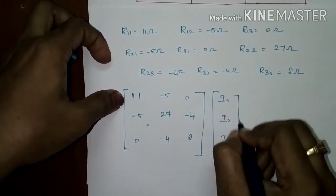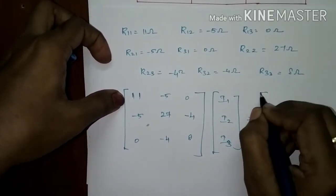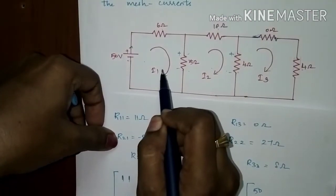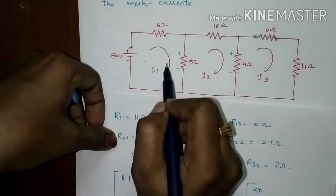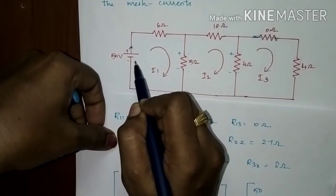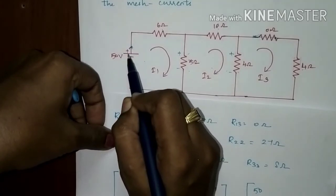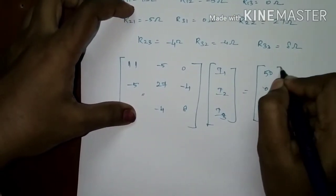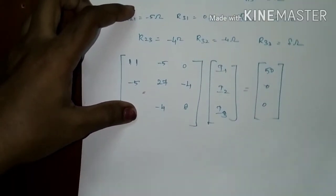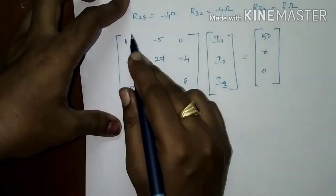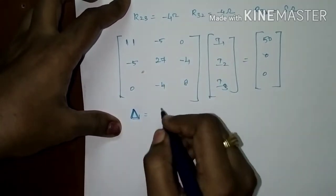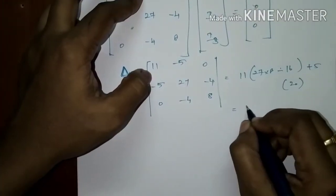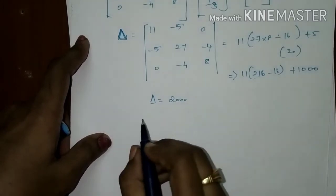Using Ohm's law, we have the current column [I1, I2, I3]. The voltage source of 50 V is connected only to the first mesh. Checking the current direction — it leaves the positive terminal and enters the negative terminal, which is the conventional current direction — so this source drives I1. The voltage column is [50, 0, 0]. Now find the value of del (the determinant). Del is the expansion of the symmetric resistance matrix; using Laplace expansion, the value of del is 2000.